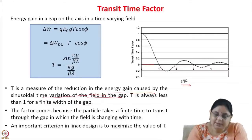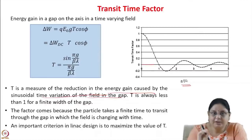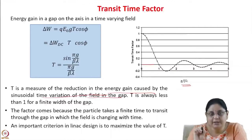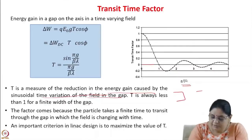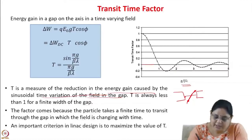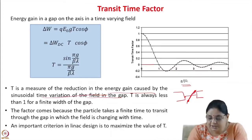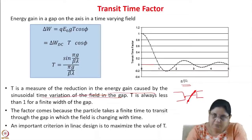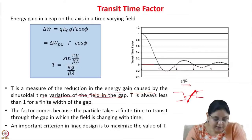The transit time factor arises because the particle takes a finite time to travel through the gap, during which the field is changing. In a DC field the electric field is constant, whereas in an RF field it is changing. Because of this finite transit time, the transit time factor comes into picture. An important criterion in linac design is to maximize the value of T.